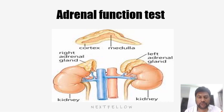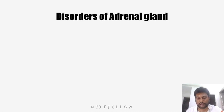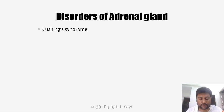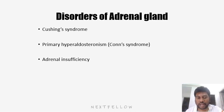Good morning. In this video, we are going to discuss Adrenal Function Tests. These are a group of tests used to check whether the adrenal gland is functioning properly or not. If it is not functioning properly, it leads to disorders. The major disorders associated with the adrenal gland are Cushing's syndrome, caused by excess cortisol production; primary hyperaldosteronism or Khan's syndrome, characterized by excess aldosterone production; and adrenal insufficiency, where production of both cortisol and aldosterone is decreased. We will see how to diagnose all these disorders with various adrenal function tests.